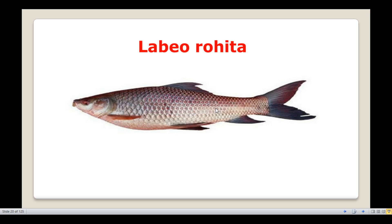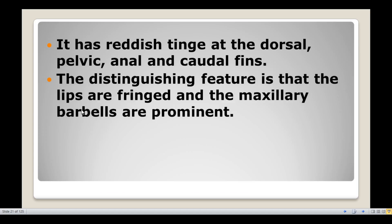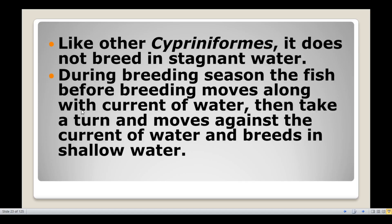The distinguishing feature is that the lips are fringed and the maxillary barbels are present. If you look at Labeo rohita, the lips are fringed, and it has a pair of maxillary barbels in the maxillary region.